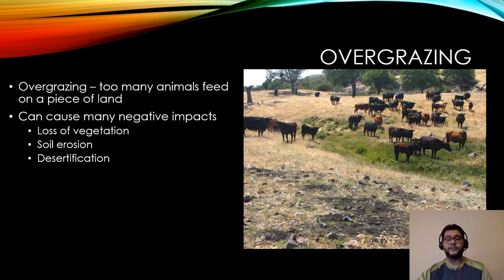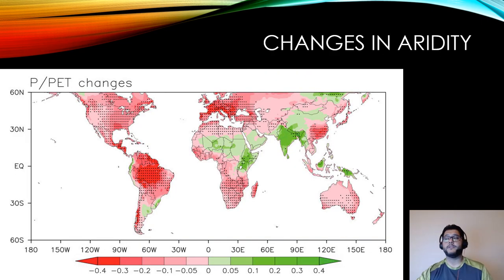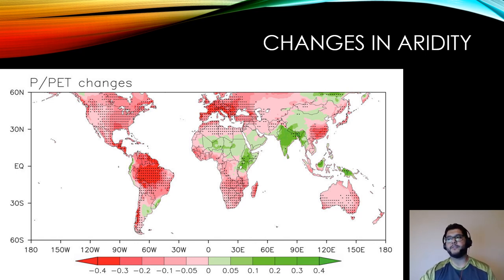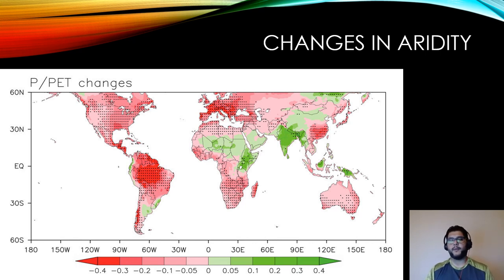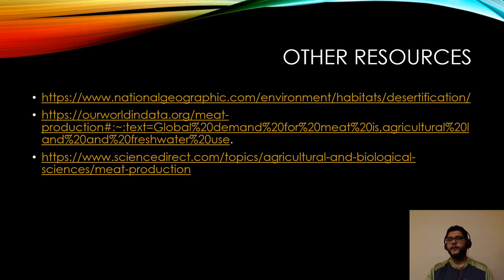Here's an example showing the change in aridity. As you can see, the red spots indicate areas where overgrazing and deforestation have led to the spread of deserts. Deserts that already existed are now spreading, with their edges moving further and further outward. Some continents that use a lot more grazing or cut down more forests are seeing significant changes in aridity — that's going to be a big problem in the future. Here are some sources to help you gather more information. Hope that was helpful — thank you.